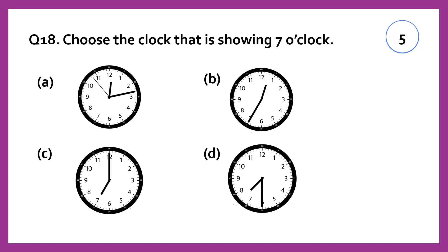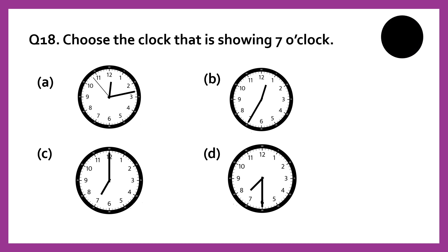Choose the clock that is showing 7 o'clock. For 7 o'clock, the longer hand should be at 12 and the shorter hand should be at 7. So it is C that shows 7 o'clock.